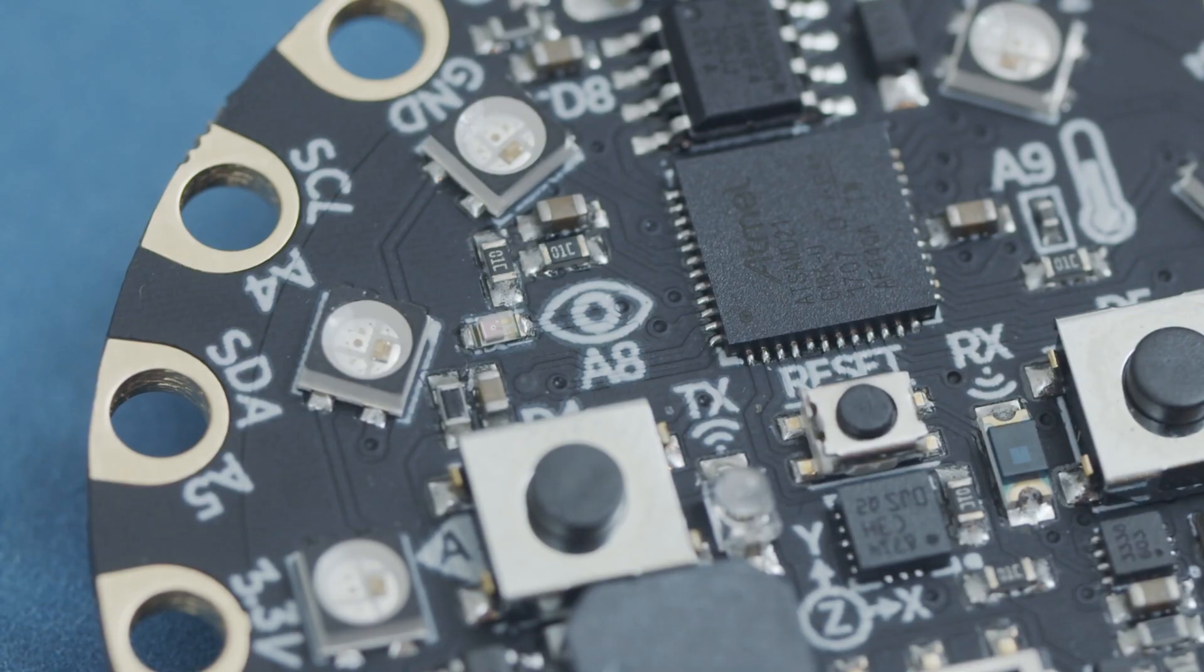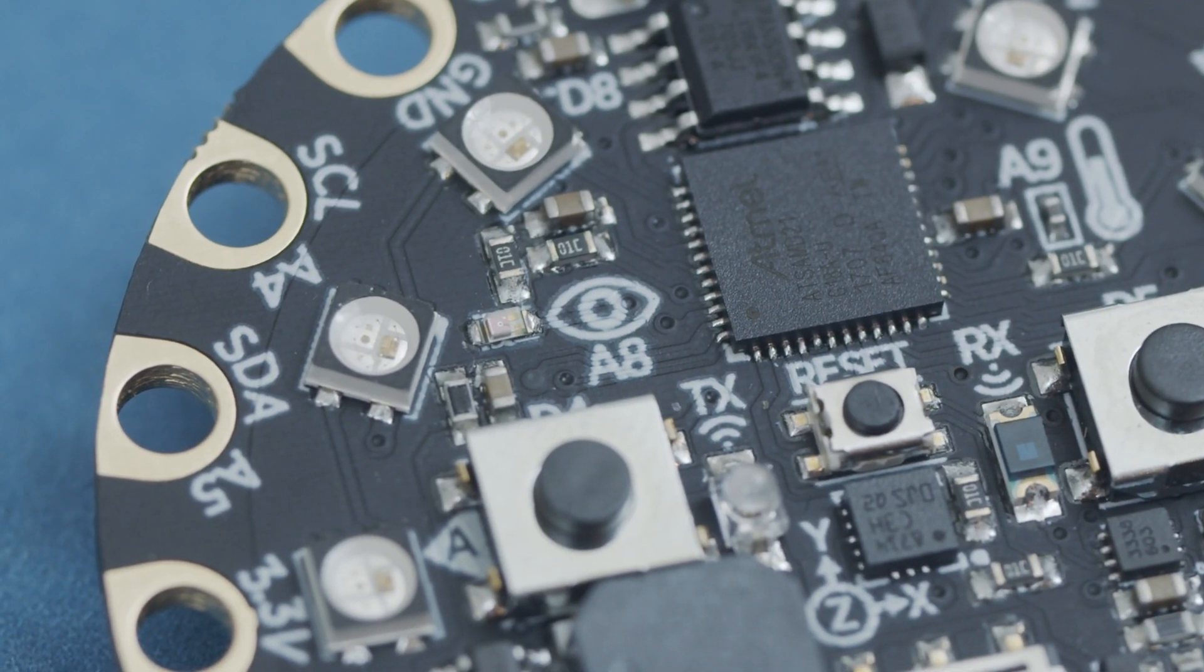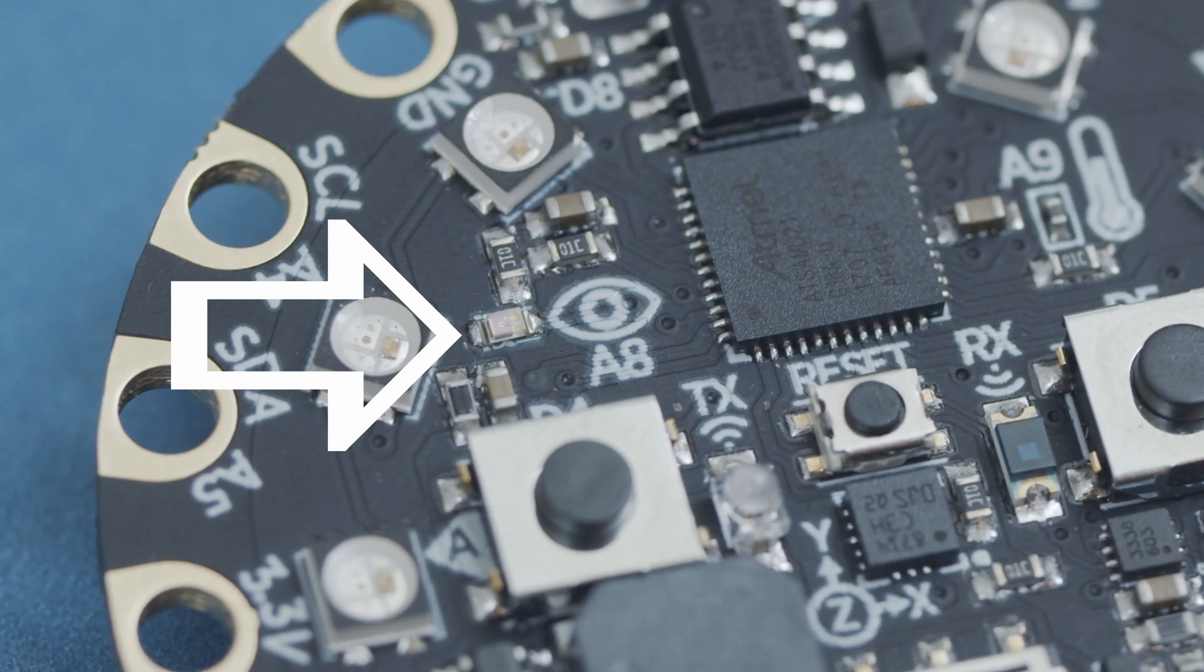A light sensor is an electrical component that changes its properties based on how much light is falling on it. We can use them to measure how light or how dark something is. The Circuit Playground Express's light sensor is the clear part next to the A8 and I symbol. This particular light sensor works very much like an LED, but in reverse.